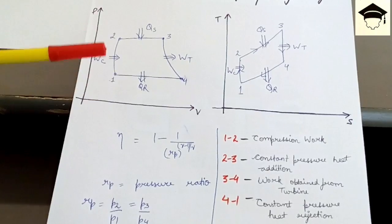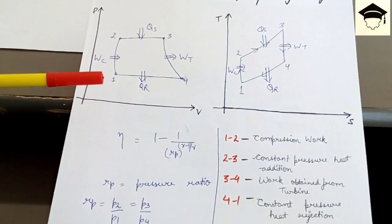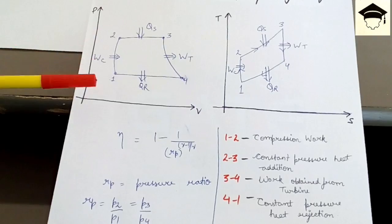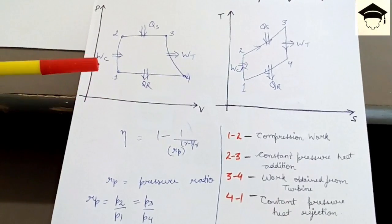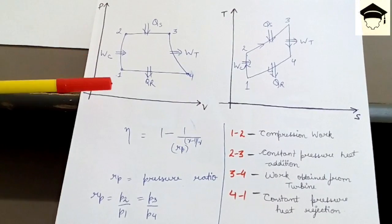And rp is equal to pressure ratio, that is p2 by p1 or p3 by p4 because p2 and p3 the pressure is same, p1 and p4 the pressure is same.